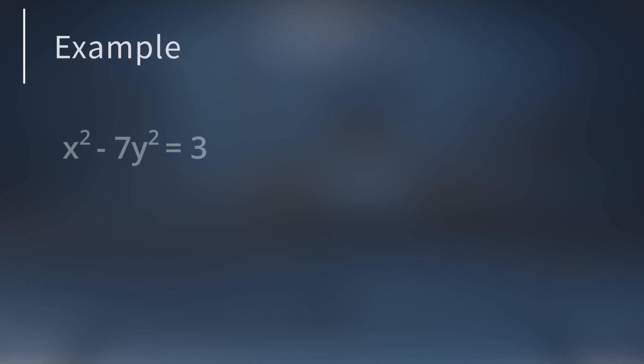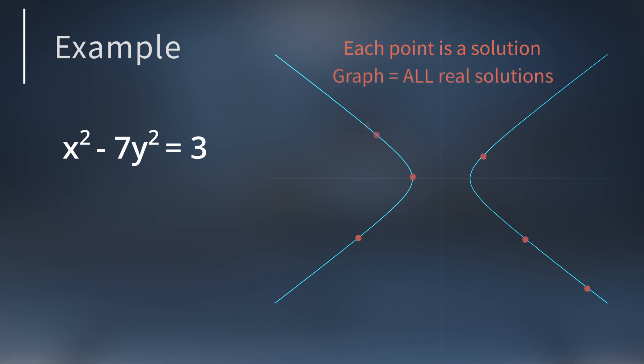Consider the equation x squared minus 7y squared equals 3. The graph of this equation is a hyperbola. Each point on a hyperbola is a solution to the equation, so the graph is a picture of all real solutions.